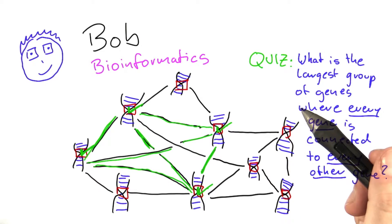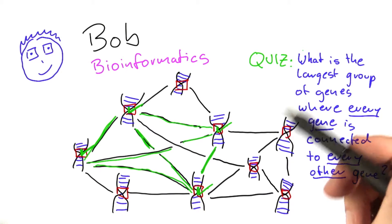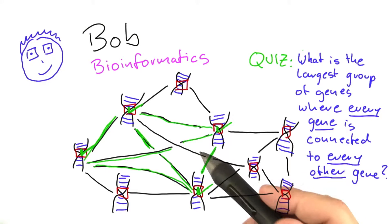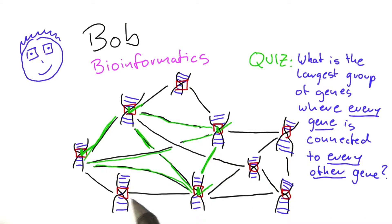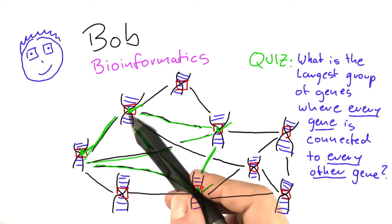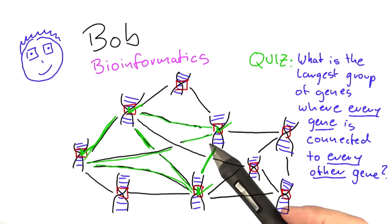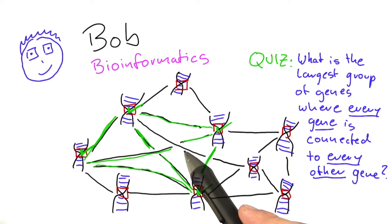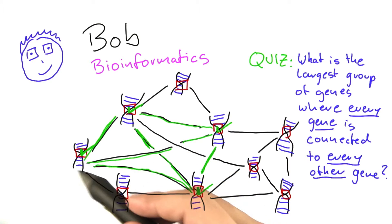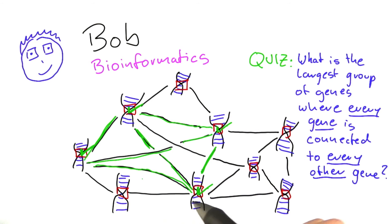It should be noted that this problem is a bit of a simplification of what you might encounter in a real biotechnology setting. Normally in biotechnology, you would be happy if you found a group of genes where most are connected to most others. But here, we'll be looking only for groups that are fully connected to each other, like this one here. The reason why we're doing that is that from an algorithmic perspective, it doesn't really make much difference, and it's simpler to work with a problem where we know we have to find groups of genes that are fully connected to each other, rather than allowing certain connections to be missing.